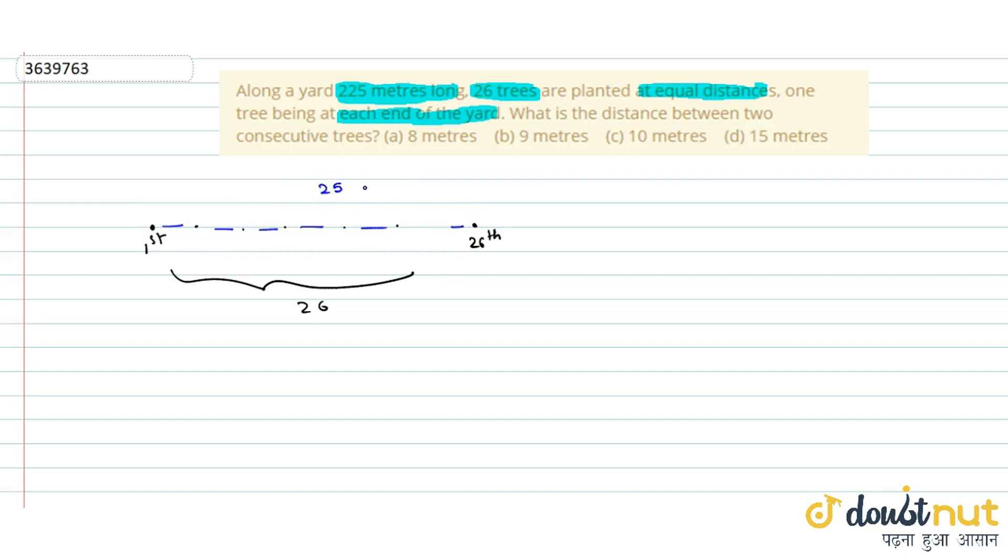The total distance has 25 gaps of equal length. If each gap is x meters long, then 25x equals 225 meters. So x should be 225 divided by 25.